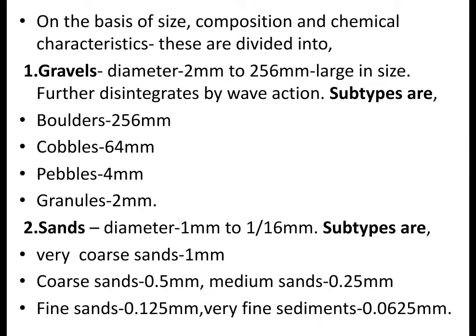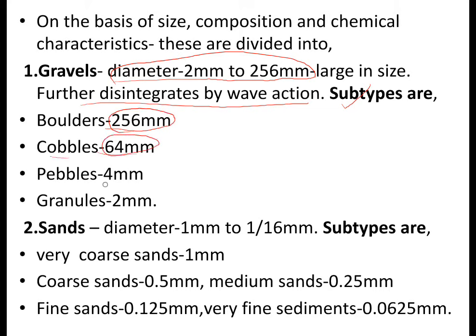On the basis of size, composition, and chemical characteristics, pterogenous sediments are divided into gravels, sands, and muds. Gravels have a diameter of 2 mm to 256 mm and are further disintegrated by wave action. Subtypes of gravels are boulders (256 mm), cobbles (64 mm), pebbles (4 mm), and granules (2 mm).